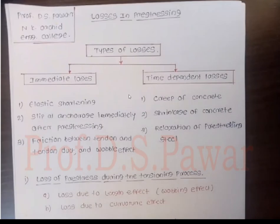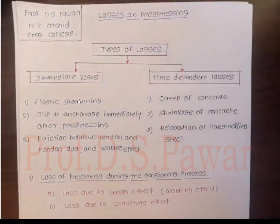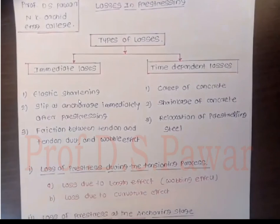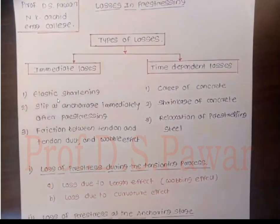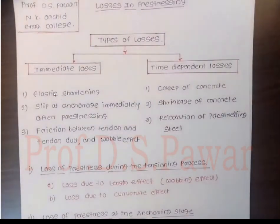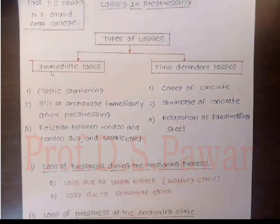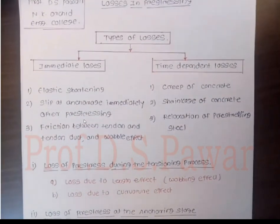First we are going to see what is meant by elastic shortening. So, what does elastic shortening mean? When the tendon is stressed, the concrete is going to shorten. Due to the pre-stressing force, elastic shortening of the concrete happens, and due to that shortening the tendon is also affected. That loss we have to consider. Elastic shortening is the second — slip at anchorages immediately after pre-stressing.